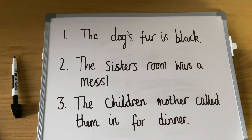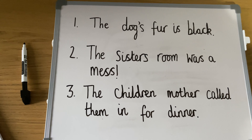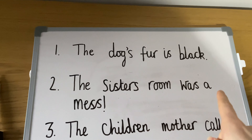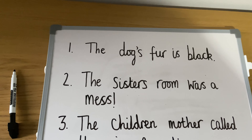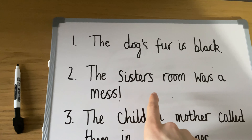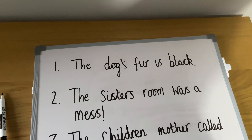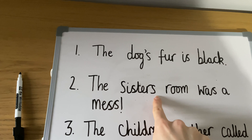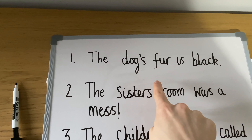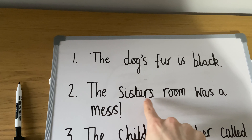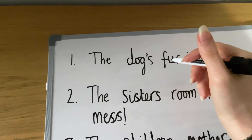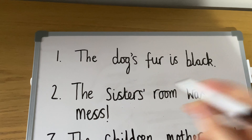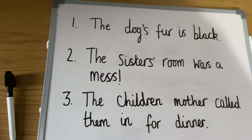This means that the sentence might be talking about more than one person — this is known as a plural noun. For example, our plural noun sentence is: the sisters' room was a mess. The word 'sisters' tells us there's more than one sister. However, this sentence is a little different — the word 'sisters' already ends in an s. So we don't add another apostrophe and s; we simply add the apostrophe at the end of the s to show there's more than one sister.